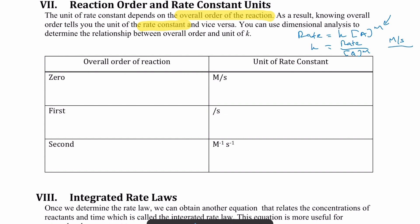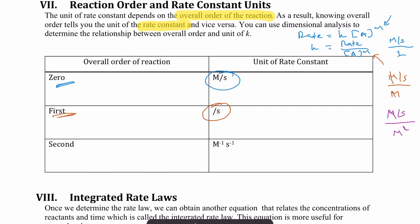For a zeroth order reaction, the denominator is 1 (anything to the power of zero), so k has units of M/s. For a first order reaction, k = (M/s) ÷ M = s⁻¹, an inverse time unit. For a second order reaction, k = (M/s) ÷ M² = M⁻¹s⁻¹. This is very useful: if you're given the rate constant with a certain unit, it automatically tells you the order of the reaction.